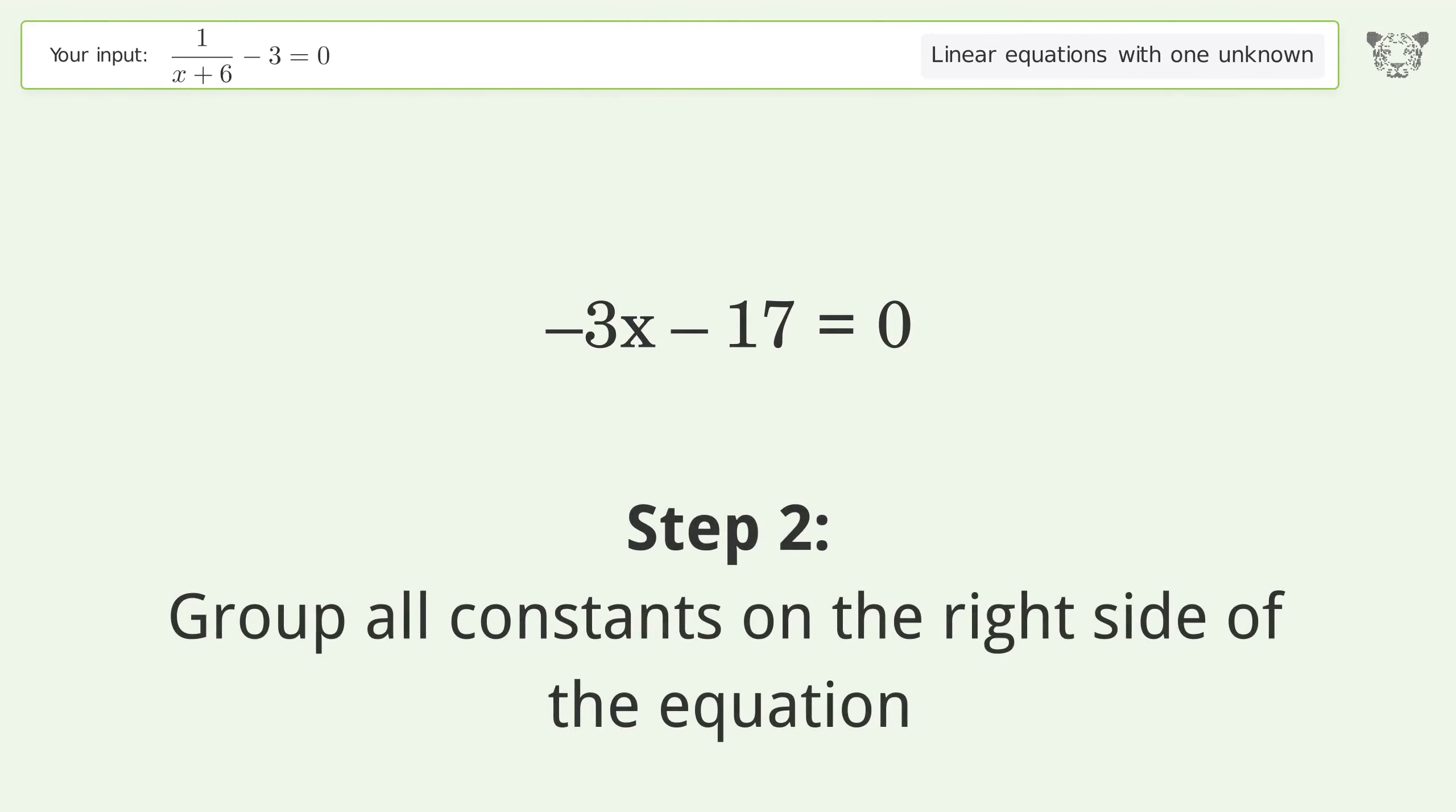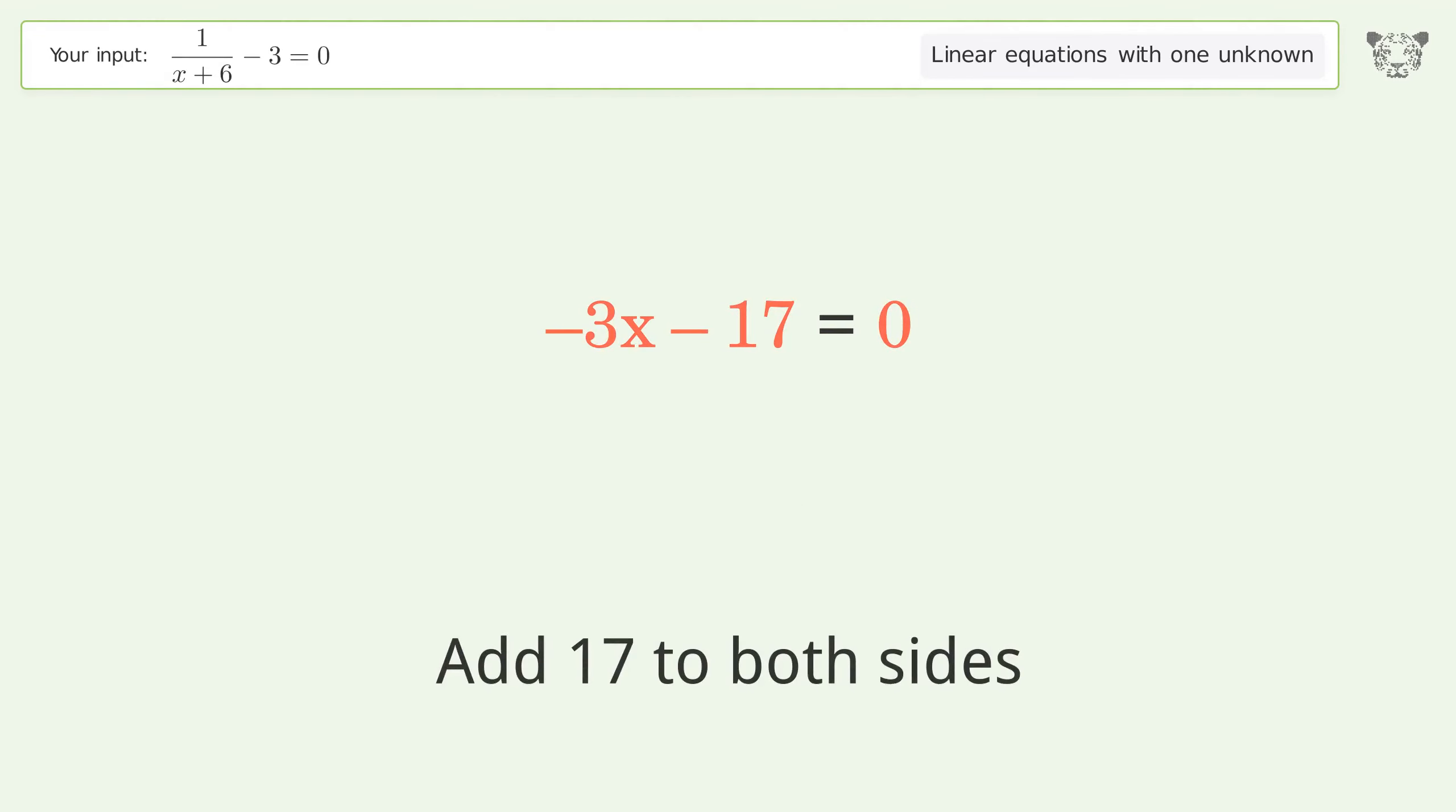Group all constants on the right side of the equation. Add 17 to both sides. Simplify the arithmetic.